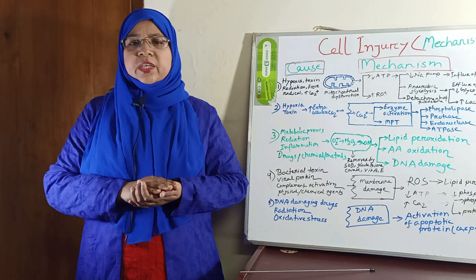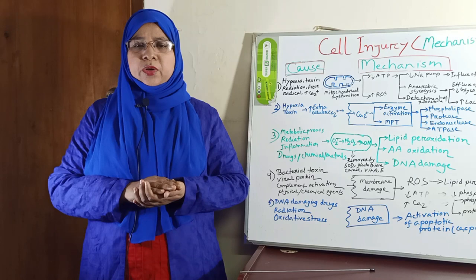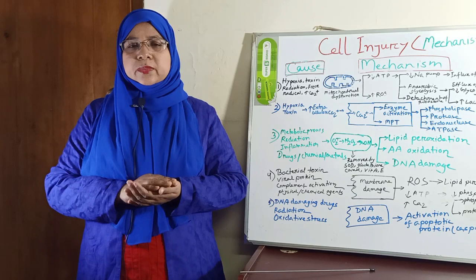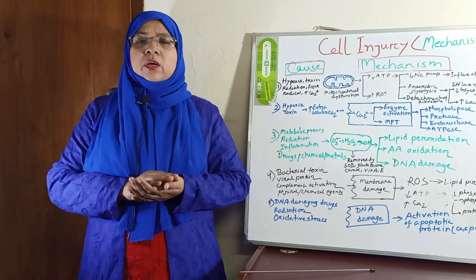Cell injury may be reversible or irreversible. If the stimulus is in mild form and the morphological changes reverse after withdrawal of stimuli, then it is referred to as reversible cell injury. There are two morphological patterns of reversible cell injury: cellular swelling and fatty change. If the stimulus is severe enough that the cell cannot adapt or recover at all, then it is considered irreversible cell injury.